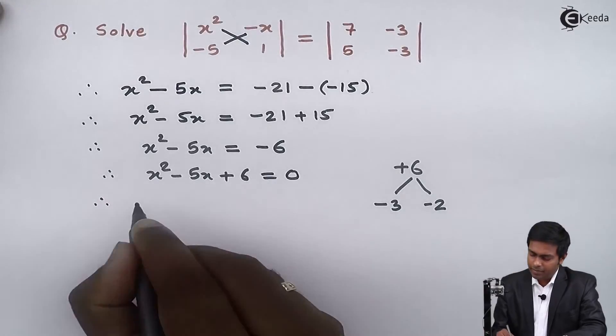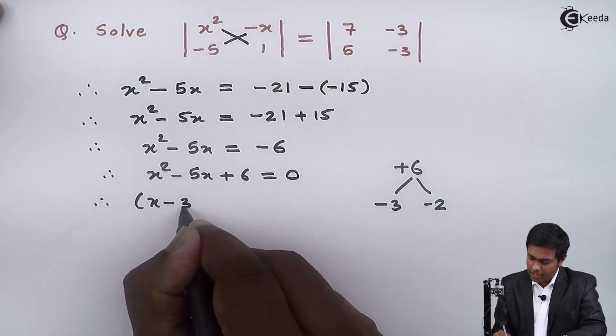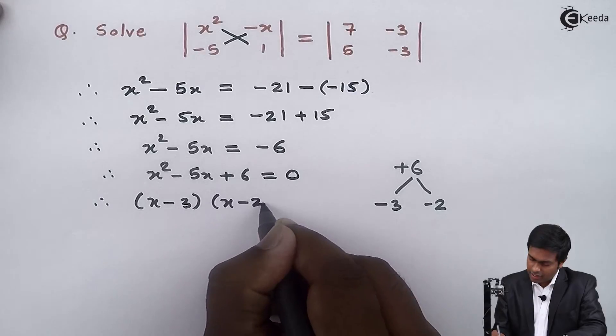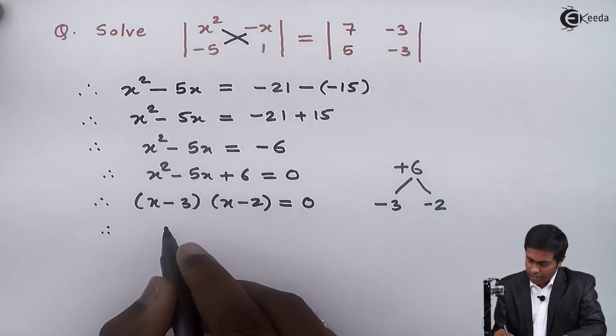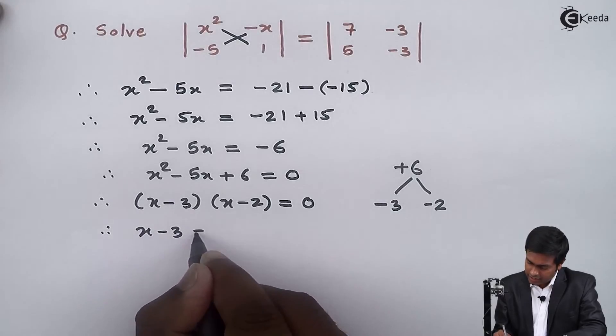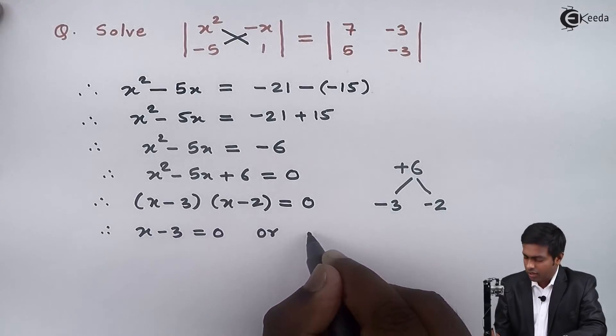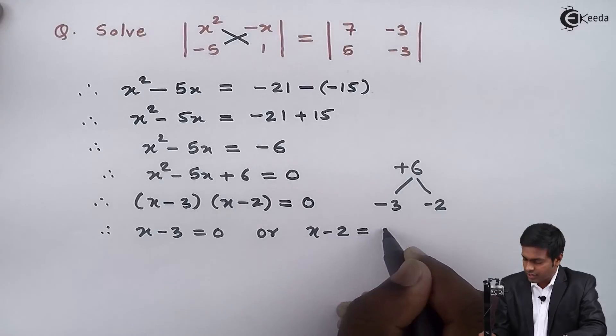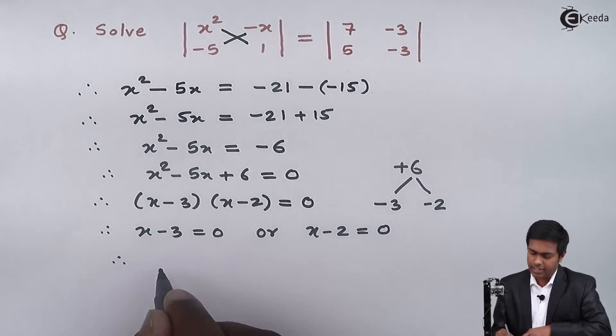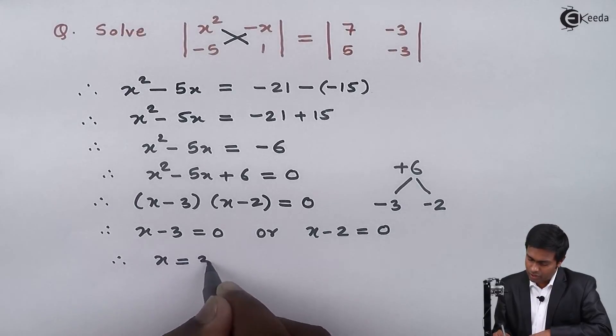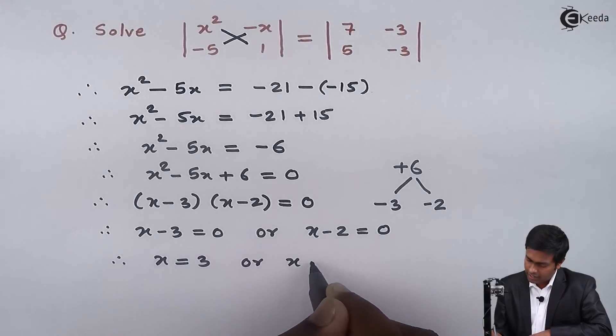So we will get x minus 3 and x minus 2 equal to 0. So now here I can say that x minus 3 is equal to 0 or x minus 2 is equal to 0. So therefore, we can say that x is equal to 3 or x is equal to 2.